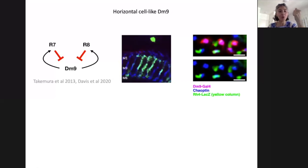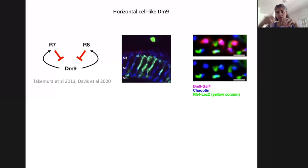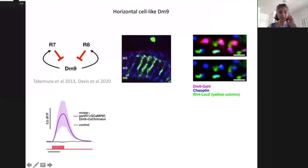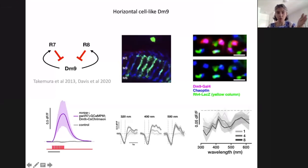We wanted to confirm that DM9 is functionally presynaptic to R7 and R8. To do this, we expressed CsChrimson in DM9, doing so in blind flies so that the orange-red light used to activate CsChrimson would not activate the visual system, and we recorded from pale R7s. When DM9 is activated, we see a response in pale R7s; in control flies, we see nothing. We also measured the tuning curve of DM9, which we hypothesized would be broadband since it gets inputs from all R7 and R8 types. Indeed, DM9 is inhibited — because R7 and R8 are inhibitory — across a large range of wavelengths spanning essentially the full range of light that flies can see.